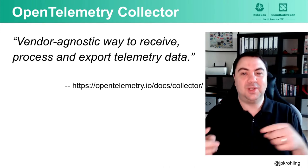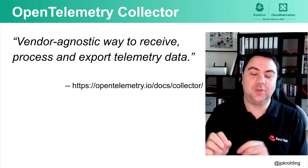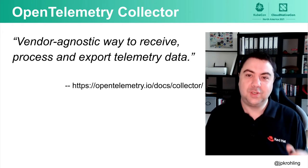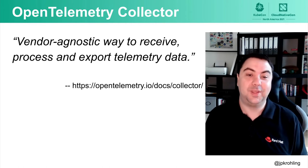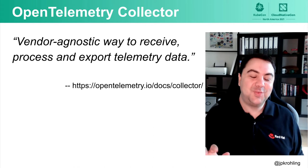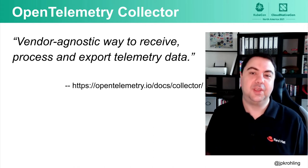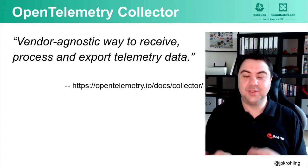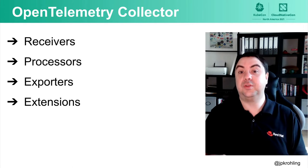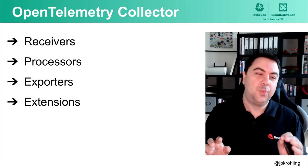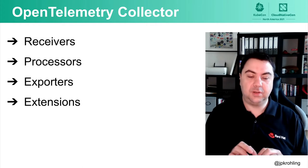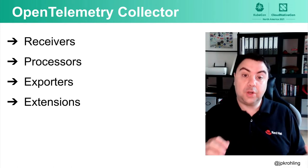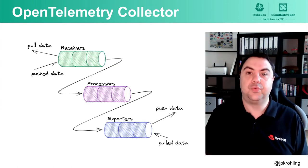If you go to OpenTelemetry's documentation and open the collector documentation, the definition is: it's a vendor-agnostic way to receive, process, and export telemetry data. This hints at the internal architecture. The collector is composed of receivers, processors, exporters, and extensions. Extensions are a special type of component that is not part of the pipeline. The collector is viewed as a pipeline for telemetry data.